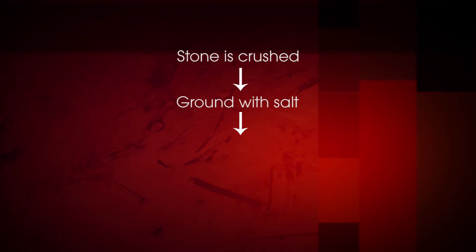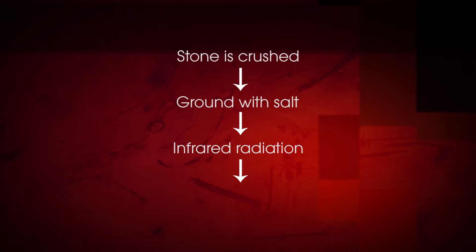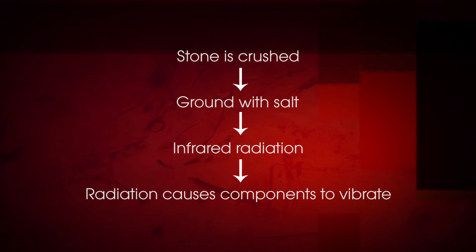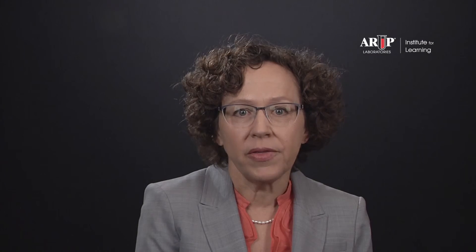At ARUP Laboratories, we use FTIR — Fourier Transform Infrared Spectroscopy — to determine calculus composition. In this technique, the stone is crushed and ground with salt, then subjected to infrared radiation. Absorption of radiation causes molecules and compounds — stone components in this case — to vibrate in characteristic, recognizable ways that can be detected, recorded, and analyzed to determine the composition of the stone. Laboratory staff analyze the spectra produced to determine the components present in the stone material, and we use an algorithm to identify and confirm the chemical composition.